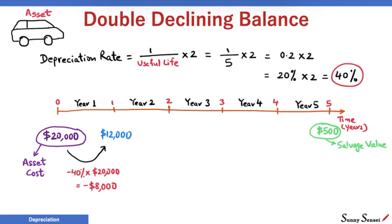In year 2, the drop is 40% of the value at the start of the year. That is 40% of $12,000 or $4,800. We end up with the asset value of $7,200 at the end of second year.